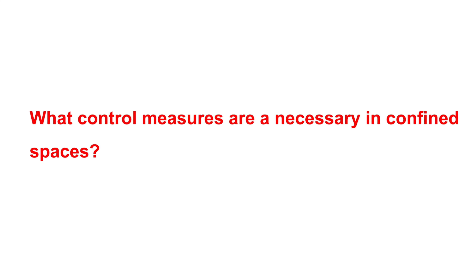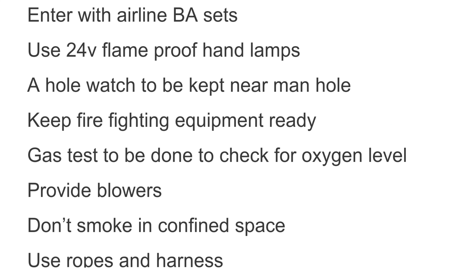Question: What control measures are necessary in confined spaces? Answer: 1. Enter with airline BA sets. 2. Use 24V flame-proof hand lamps. 3. A watch to be kept near manhole. 4. Keep firefighting equipment ready. 5. Gas tests to be done to check for oxygen level.